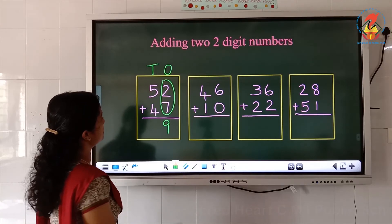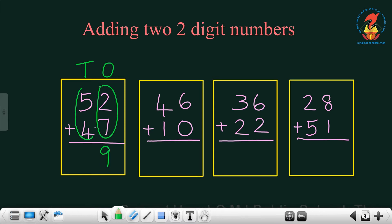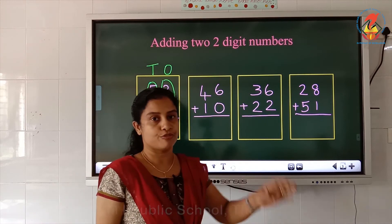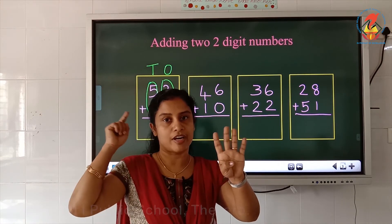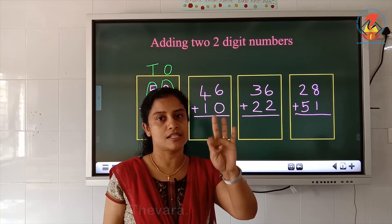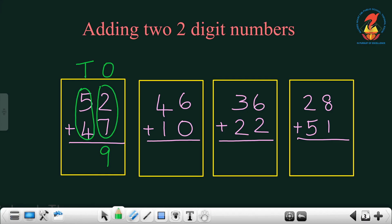Then which are the numbers in the tens place? 5 and 4. So how will you do 5 plus 4? 4 in the hand and 5 in the mind — after 5: 6, 7, 8, 9. So we write 9 in the tens place. The answer is 99.